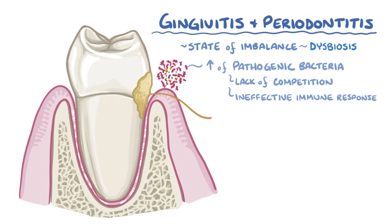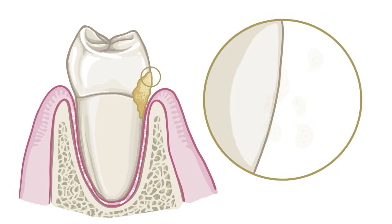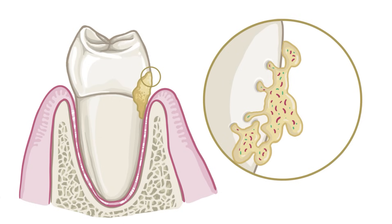The pathogenic bacteria form dental plaque, which is a sticky collection of bacteria, proteins from saliva, and dead cells from the lining of the mouth. Individual bacteria multiply and form a lot of small microcolonies that coalesce, creating a layer of dental plaque, which is a type of biofilm.